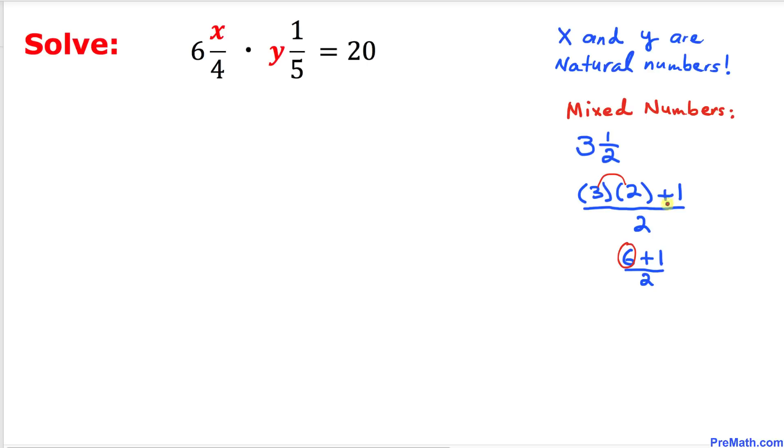Here 2 times 3 is 6, and then plus 1 divided by 2, and that is equal to 7 divided by 2. So therefore this mixed number can be written as this improper fraction 7 over 2.